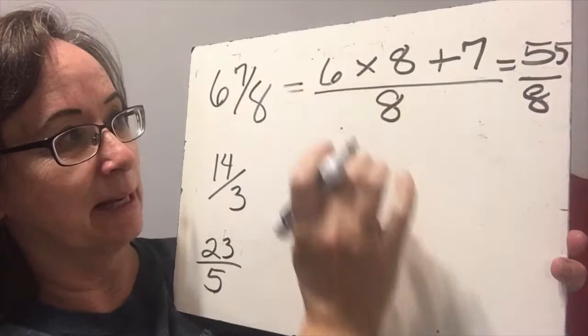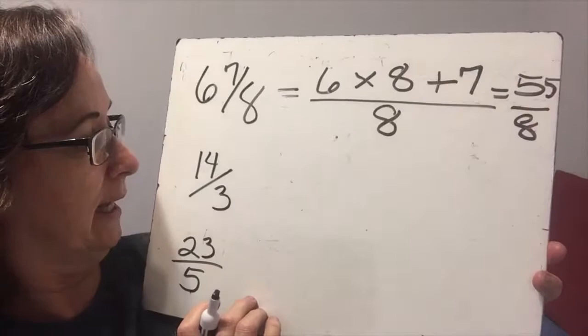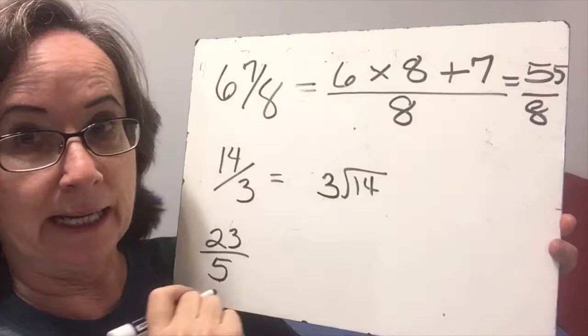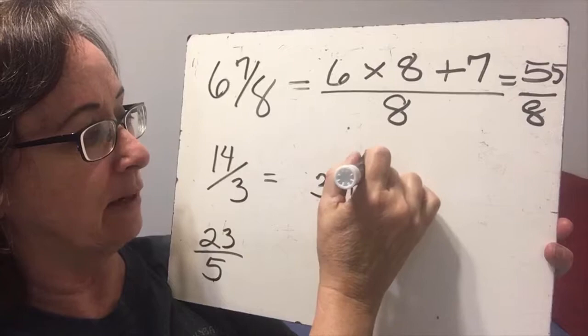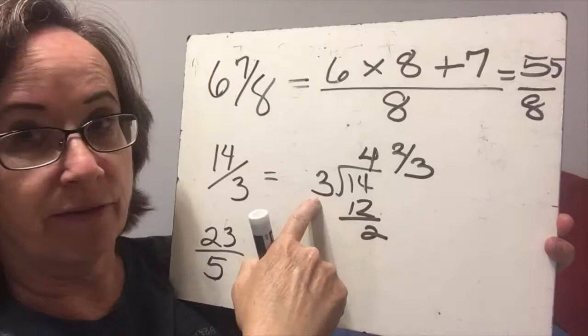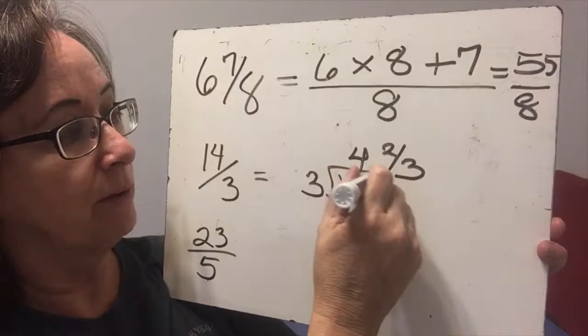And then we're going to do this one. 14 thirds is improper because the numerator is bigger than the denominator. So we're going to divide 14 by 3 to find out how many hole times it will go in. And 3 goes into 14, 4. And 4 times 3 is 12. So there are 2 remaining. So that 2 will become a 2 thirds. 2 out of 3 that were needed for the hole. So the answer would be 4 and 2 thirds.